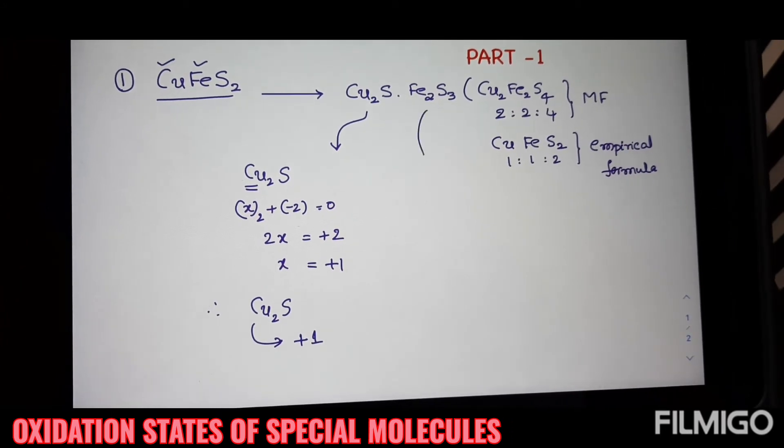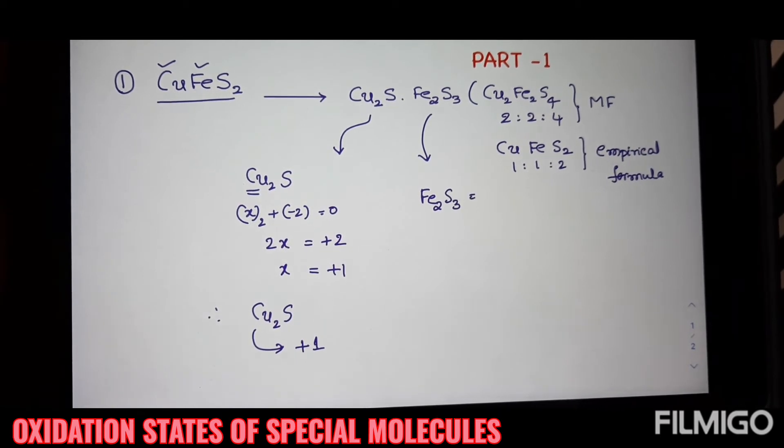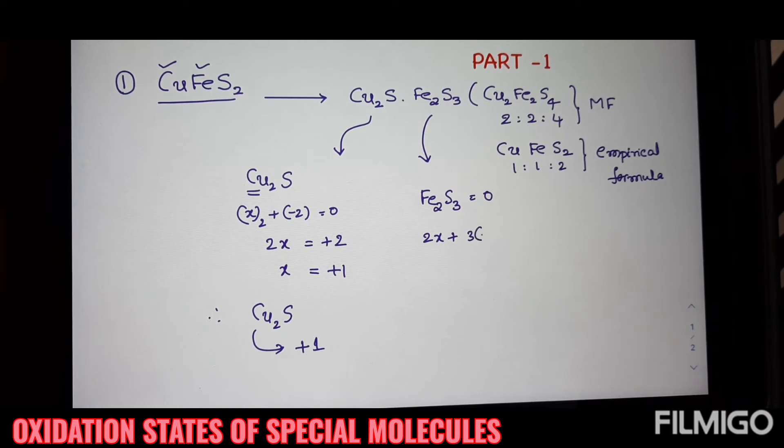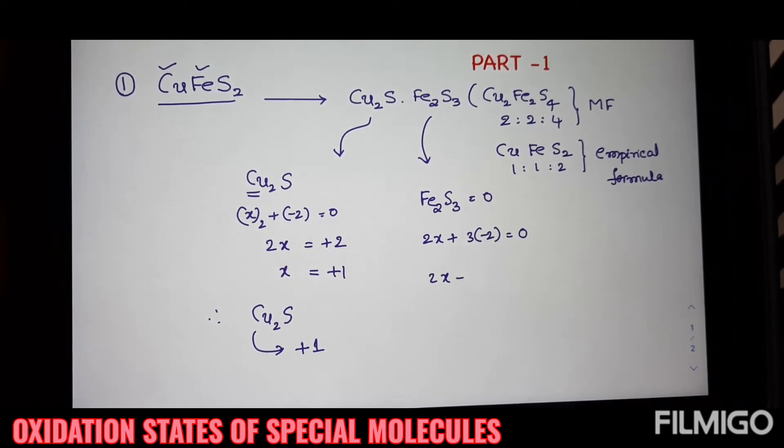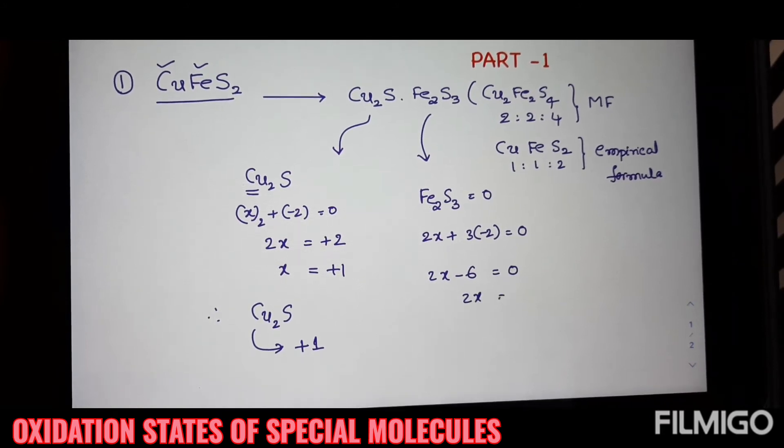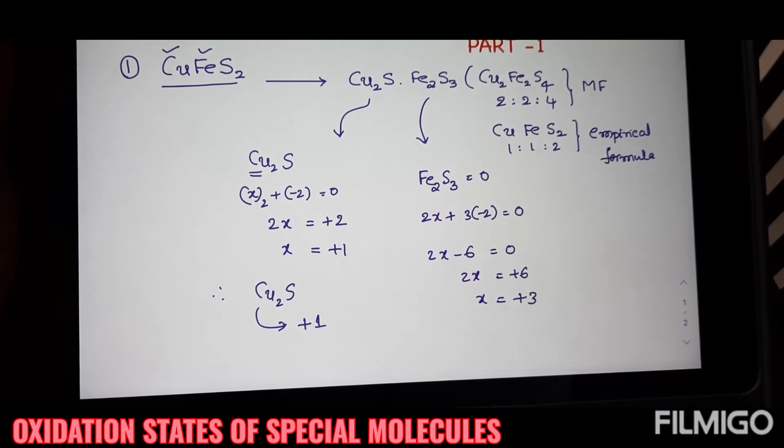And for Fe2S3, the total oxidation state is equal to 0 and iron is X and sulfur is minus 2. And on simplification, the answer will be plus 3.